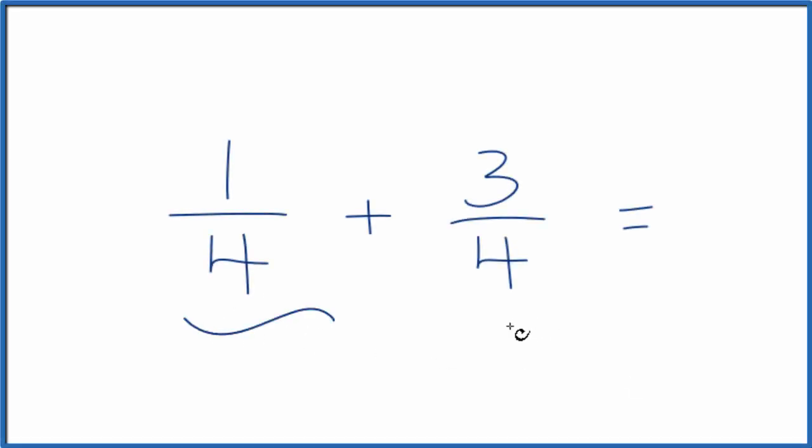Let's add the fractions one-fourth plus three-fourths. So to do this, when we're adding fractions, we need to make sure the denominator, that's the number on the bottom, is the same, that we have a common denominator.